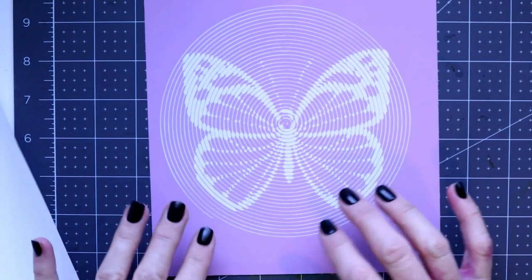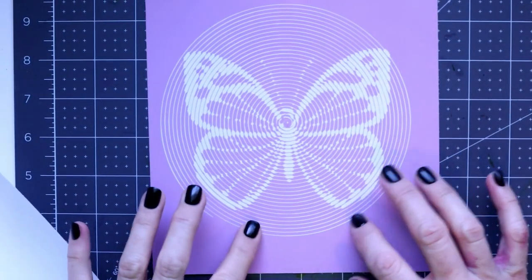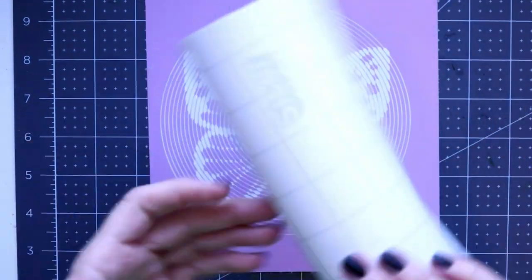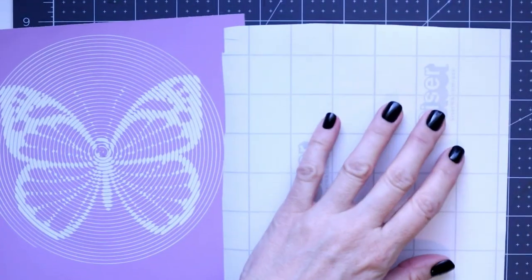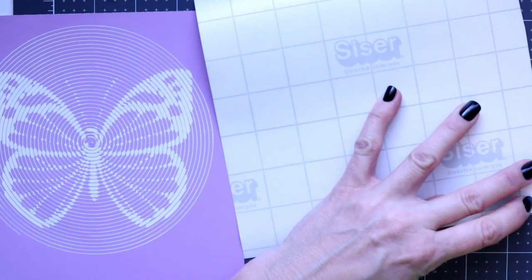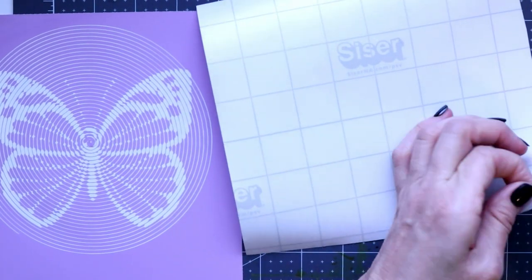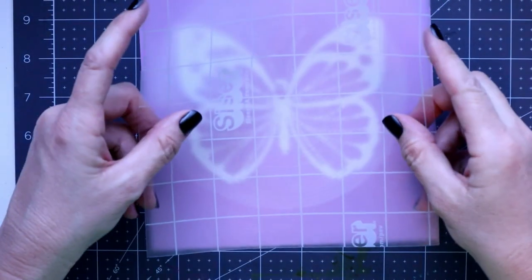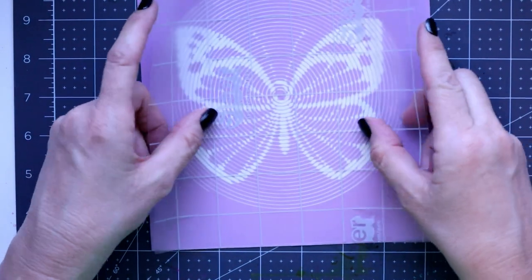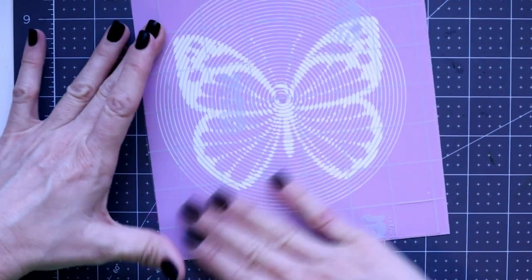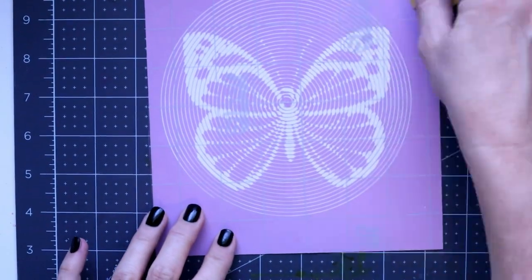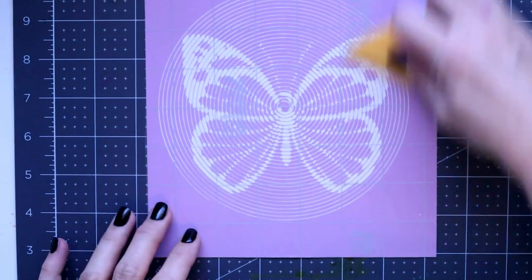Once you have the spiral betty removed, and again it's just the thin lines, then I'm going to take transfer tape and go over it to make sure that it all transfers over.